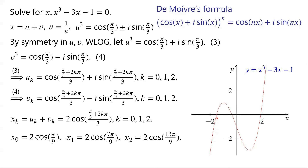From the graph, we can see that the equation has three roots. x₀ is approximately equal to 1.88, x₁ is approximately equal to −1.53, and x₂ is approximately equal to −0.35.